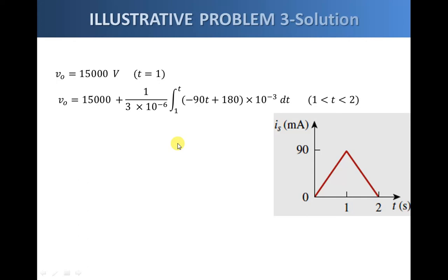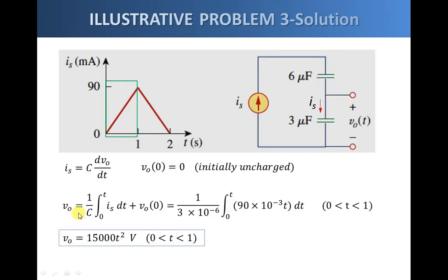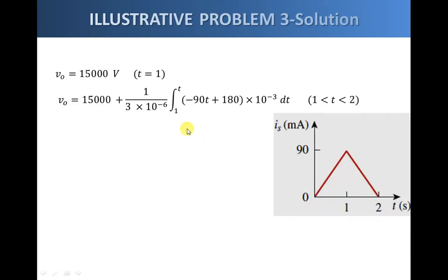To get the voltage across the three microfarad capacitor between one and two seconds, we again use the same formula. But this time we have a non-zero initial voltage — the voltage at exactly one second — which is 15 volts, plus the accumulated charge integrated between one and t, where t is between one and two seconds.